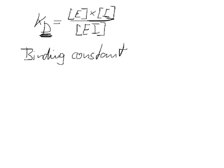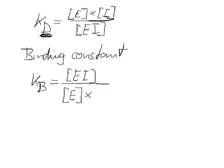And this would basically look at the reverse reaction. So for Kb, we would have enzyme-inhibitor divided by enzyme times inhibitor in this case. So Kb is really nothing else but 1 over Kd.